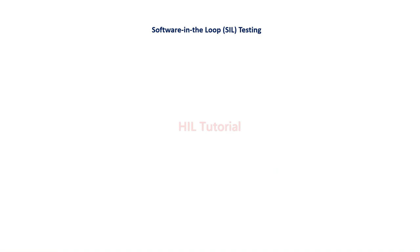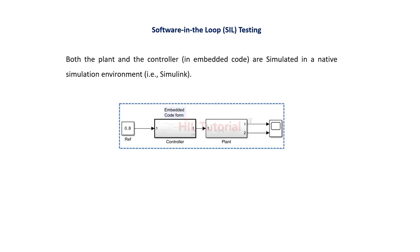In Software-in-the-Loop testing, also called SIL testing, the definition is a little bit different compared to Model-in-the-Loop testing. In SIL testing, both the plant as well as the controller will be simulated in the same Simulink environment, but the change is that the controller will be in code form. There will be a facility in the Simulink environment that allows your controller — which you made using blocks — to be converted into code form, specifically embedded code.